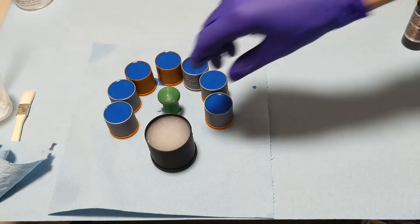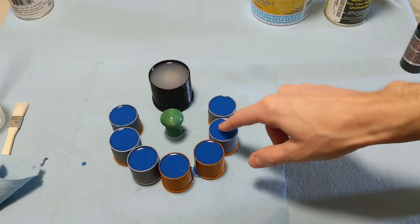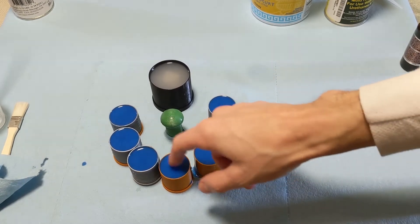Once the silicone is poured, I will put it in the pressure pot until it is done curing. And then once it's cured, we'll go ahead and remove them from the containers.